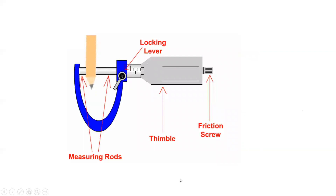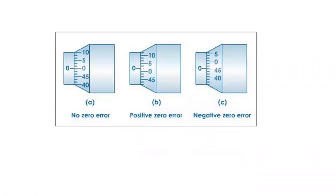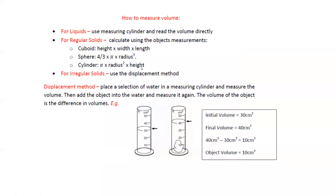When using the micrometer, the object is placed between the jaws, then we close the lever and measure the main scale and the circular scale reading. Now, how to measure volume — volume means the space occupied by an object. How we measure it depends on the state of the substance and whether it has a regular or definite shape.